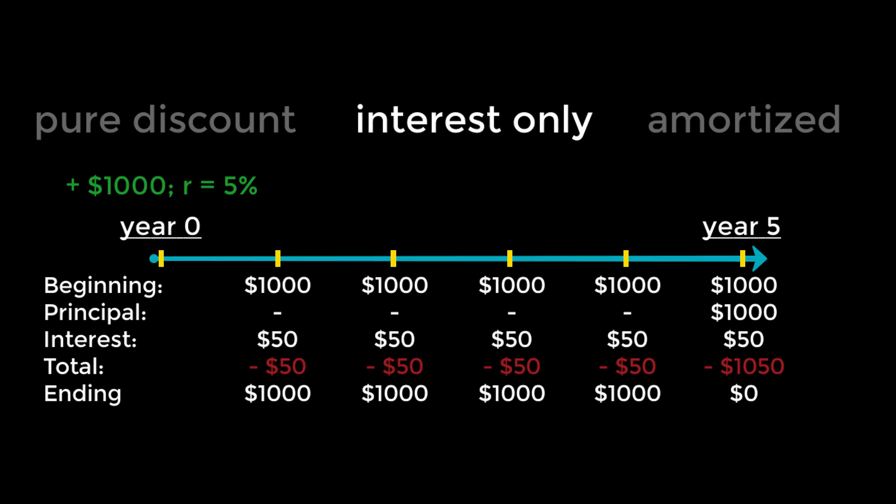Interest-only loans allow the borrower to receive the money today and pay only the interest each period. The payment of the principal, the original loan amount, can be deferred to some point in the future when the borrower pays both the interest for that period and the principal. If the borrower never has to repay the principal amount, theoretically, an interest-only loan could be considered a perpetuity. Another financial instrument that usually takes the form of an interest-only loan is a bond. We'll cover that in the next couple of videos. We can see how this is different from the cash flows in the pure discount when spread over multiple periods, but note that there's no difference between a pure discount loan and an interest-only loan if there's only one period.